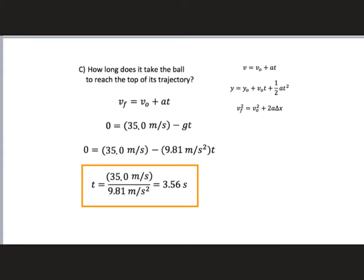Right now we're trying to find how long — that's a time. The third equation has no time in it, so we won't use that one. Looking at the first equation: do we know the velocity of the ball at the top? We just said it was zero. The initial velocity is 35 meters per second upward, and the acceleration is little g downward. We know all values except the time, so we just plug into the kinematics equation and solve for time.